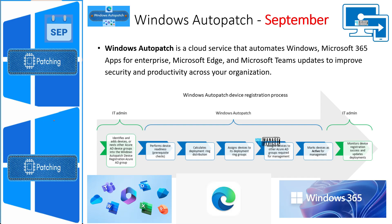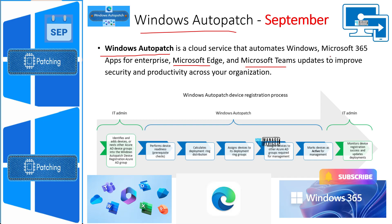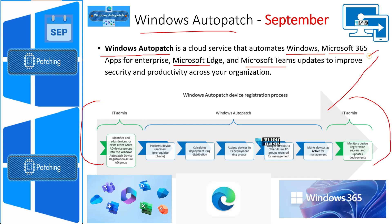Now let's look into the next level of automation for patching. If you are struggling with monthly patching activities and want to automate it, Windows Autopatch is the best option — it is a service provided by Microsoft. For this, your devices need to be enrolled in and managed by Intune. You will then get patches for enterprise applications such as Microsoft Edge, Microsoft Teams, Microsoft 365, Windows, and more. I have explained this in a separate video, which you can refer to via the i button in YouTube.